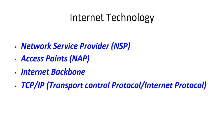A network service provider, NSP, maintains a series of communication links for internet data. These links interconnect at several network access points so that data can flow through NSP cables, wires, and satellites, which carry internet data across an interlinked communications network. Data is transmitted from one internet host to another along the best possible route.